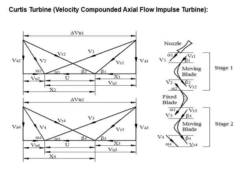Consider the inlet velocity triangle to find the distance x1. Using trigonometric relations: cos beta 1 is the ratio of adjacent side to hypotenuse, where the adjacent side is x1 and the hypotenuse is Vr1. Therefore, x1 equals Vr1 cos beta 1.